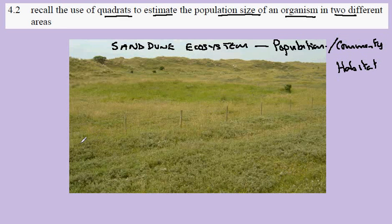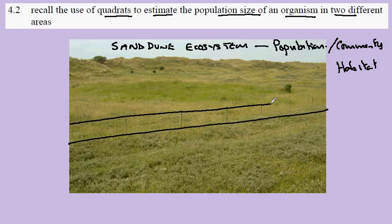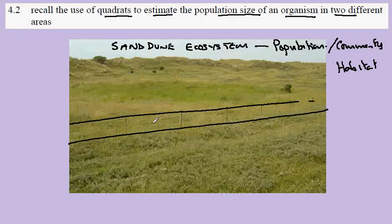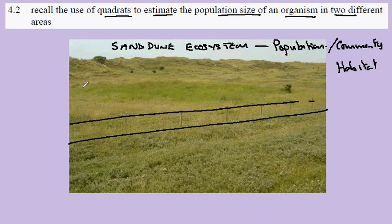Notice also that in this image, there's a fence line running here, and this splits the sand dune area into a region on this side which is grazed by cattle and this side which is ungrazed. There is no cattle grazing here.